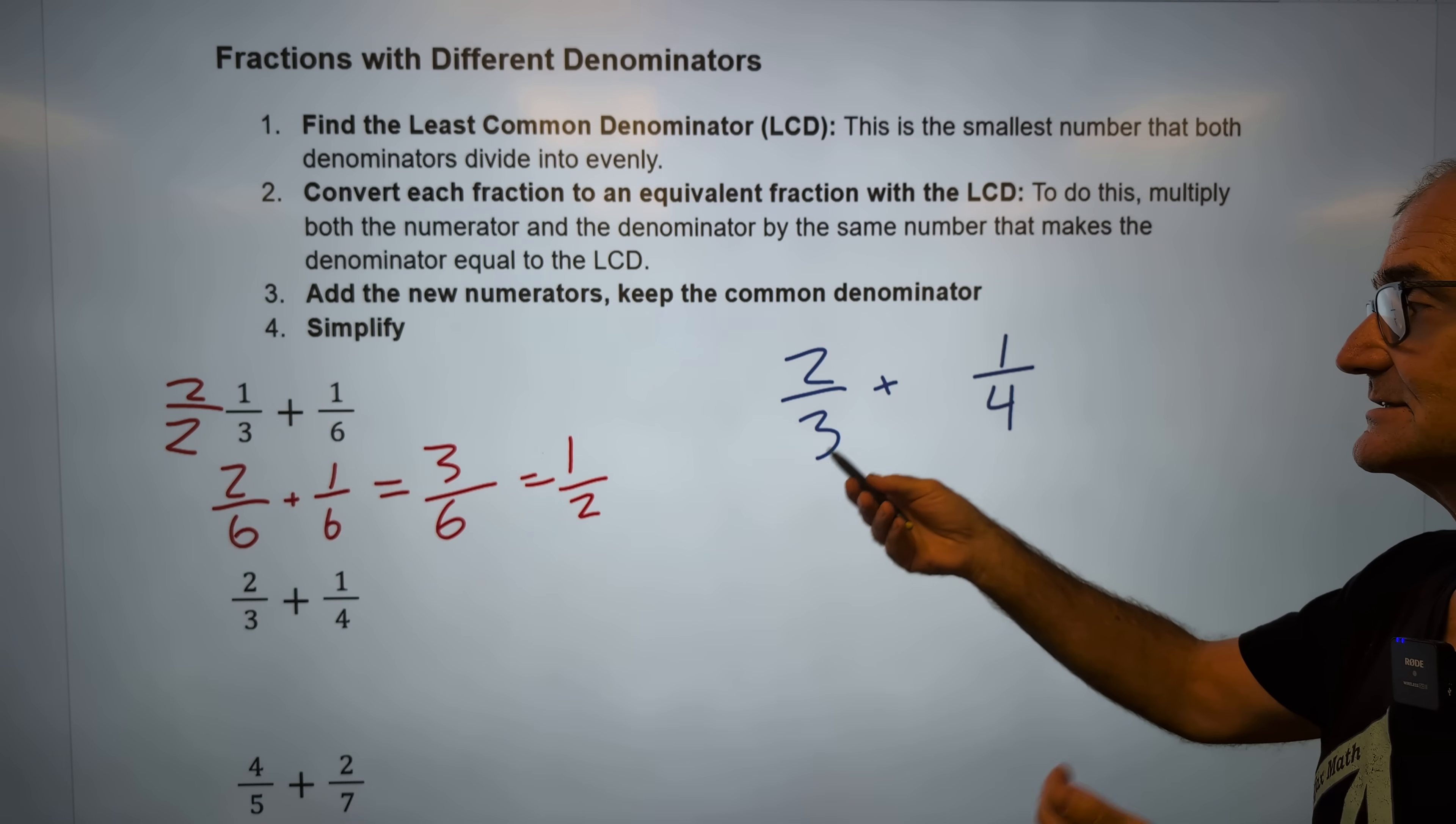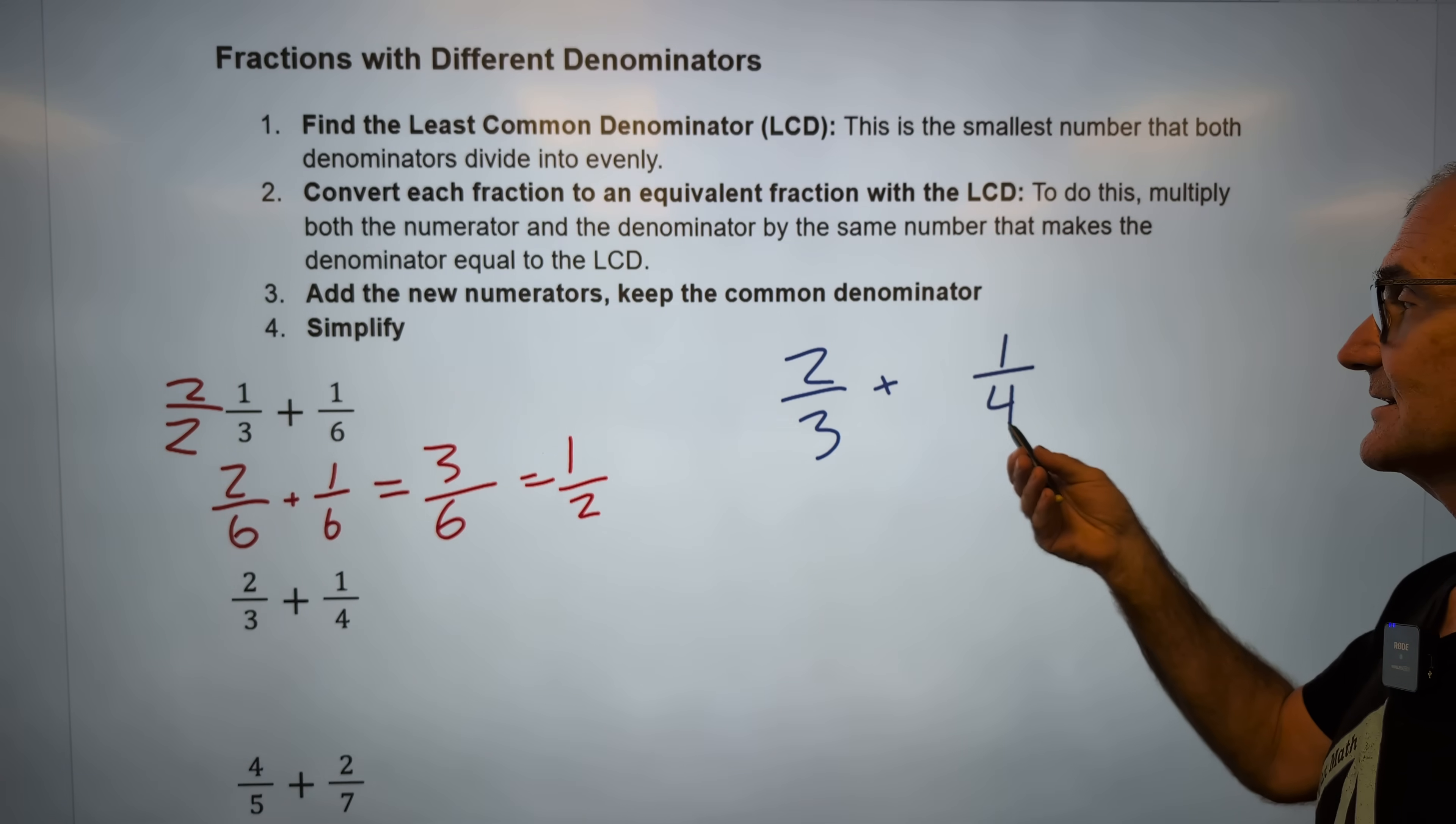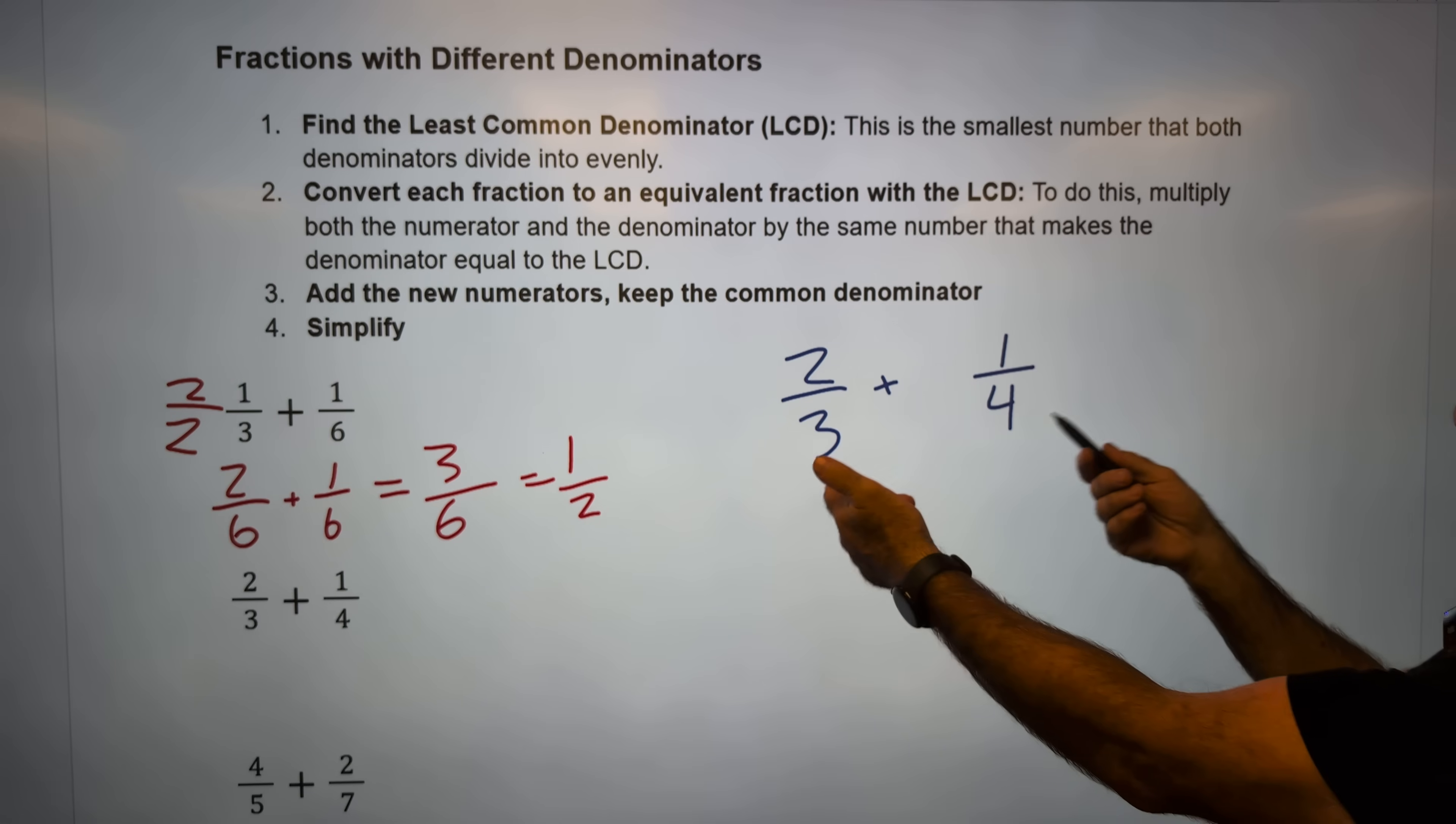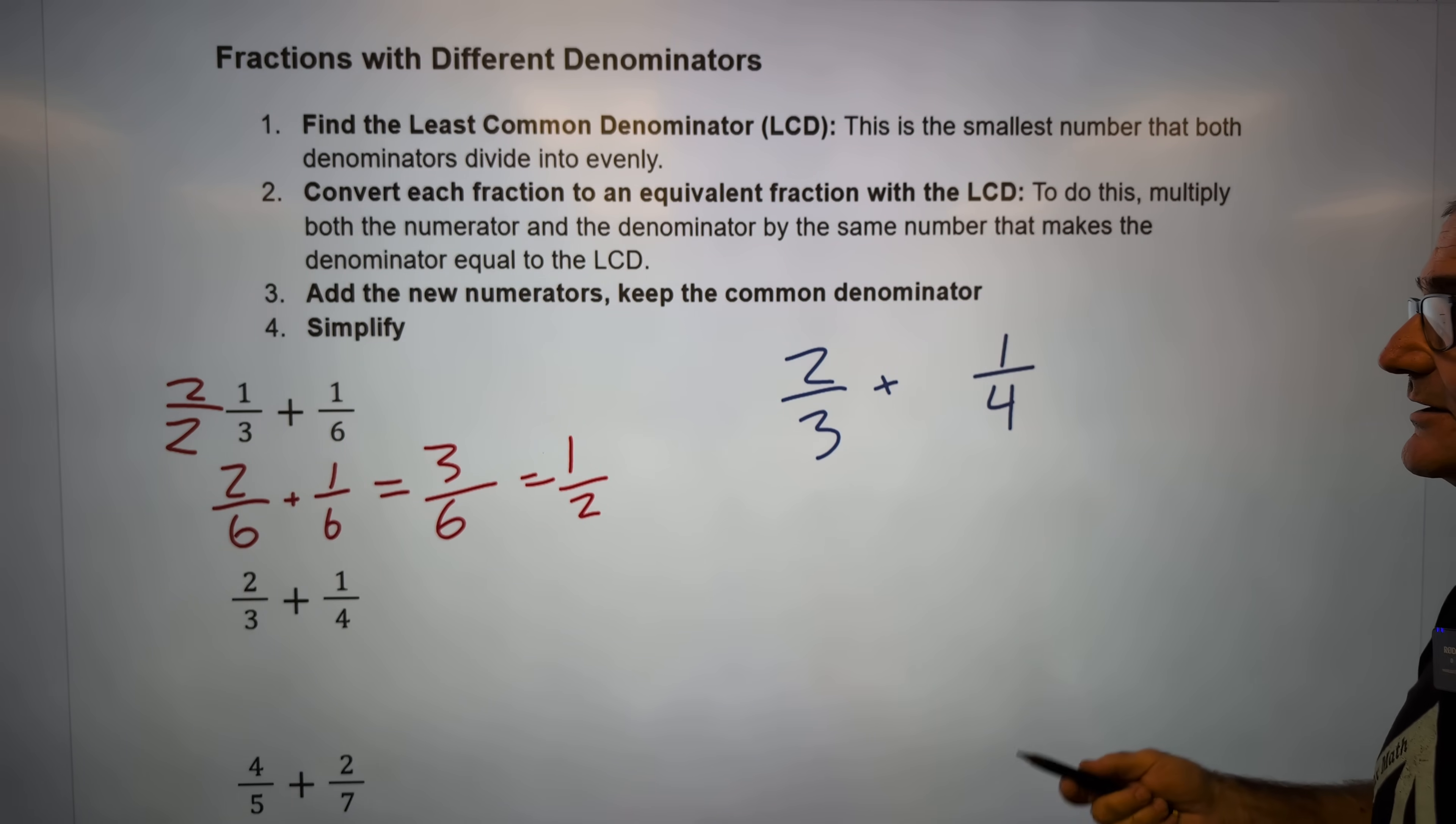Twelve is the only number they'll go into. This will go into three, six, nine, twelve. This will not go into six or nine. This will go into eight, twelve. So the only one that they will both go into is twelve.